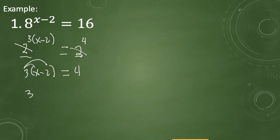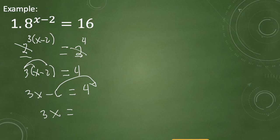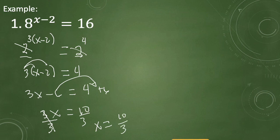We solve: 3 times x gives 3x, and 3 times negative 2 gives negative 6, so 3x minus 6 equals 4. Transferring, we have 3x equals 4 plus 6, which is 10. Dividing both sides by 3, the answer is x equals 10 over 3. When we substitute 10 over 3, the answer becomes 16.